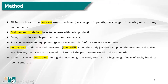Environment conditions must be the same as in cell production. An adequate quantity of sample parts with the same characteristic and suitable measurement equipment should be used, and production and measurement must be consecutive during the study. This is the most important requirement for machine capability study. If the process is interrupted during machining, the study returns to the beginning.